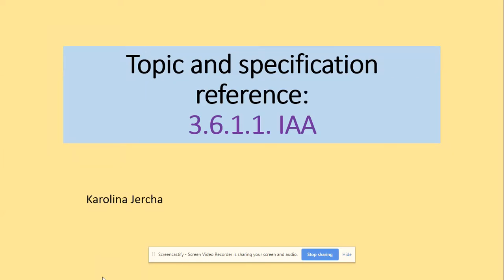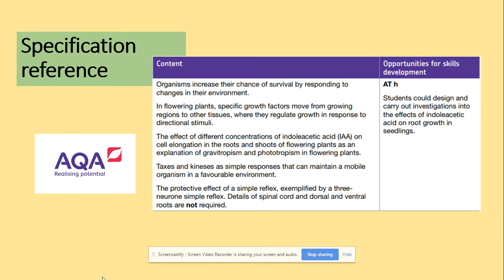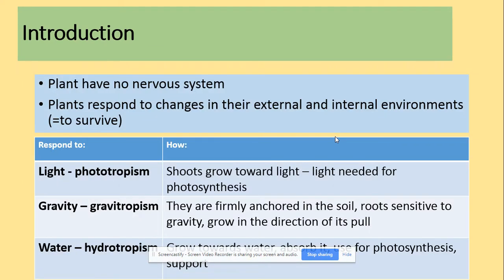Hi guys and welcome to the plant growth factors IAA. In terms of the specification, we were looking at taxes and kinesis so far. We've managed to look at this a little bit, but today we will be looking at the IAA and the cell elongation in roots and shoots. Plants obviously have no nervous system and they will respond to changes in the external and internal environment to survive.